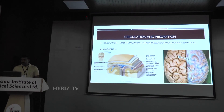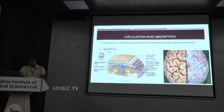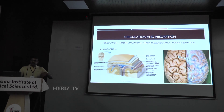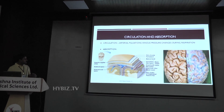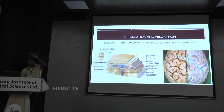CSF is produced mainly in the lateral ventricles, circulates around the spinal cord, and then — where is it absorbed? We know there are three layers of meninges around the brain and spinal cord: from outer to inner, the dura mater, the arachnoid, and the pia mater. This is a section through the superior surface of the head — a coronal section.